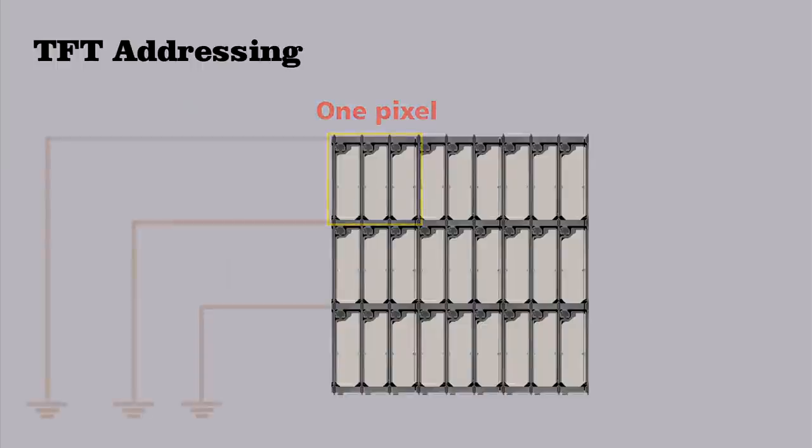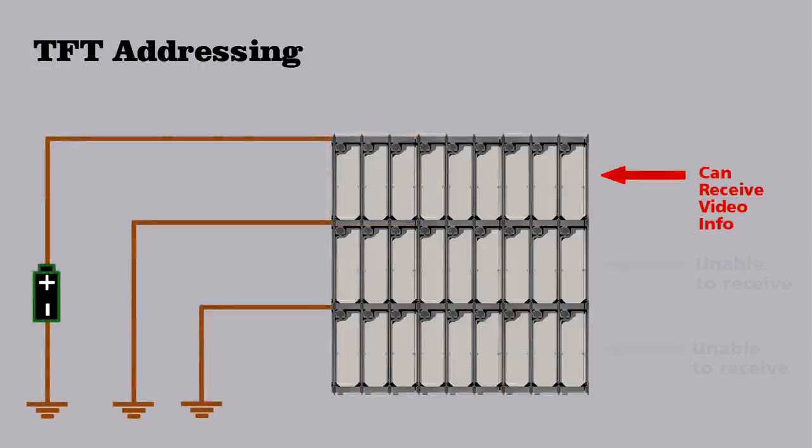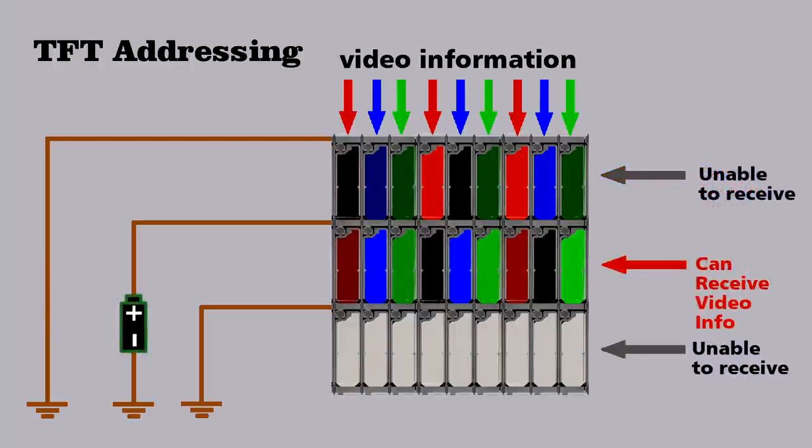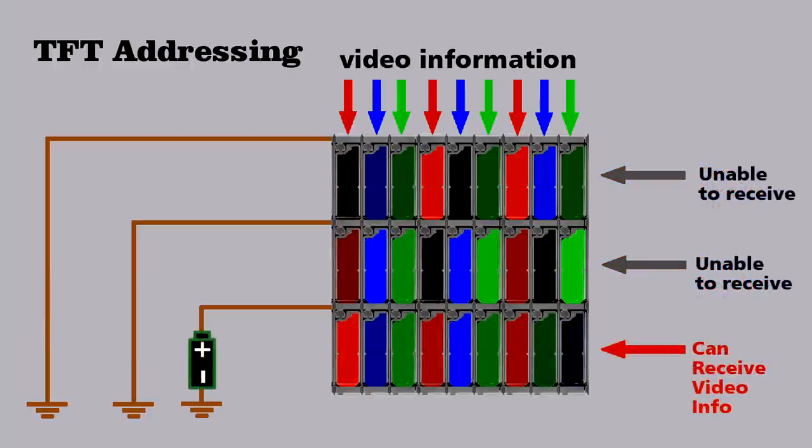This transistor you see here functions as a switch that allows the screen to be updated row by row. By applying a voltage to a specific row while keeping the other rows grounded, we allow each subpixel in that row to receive video data coming from the top of the screen. Only one row can receive information at a time, but the speed with which this happens for each row is so fast that your brain blends it into a fluid image.